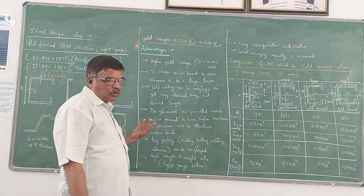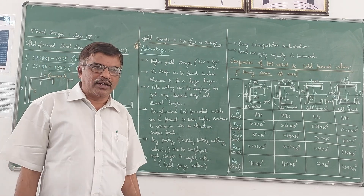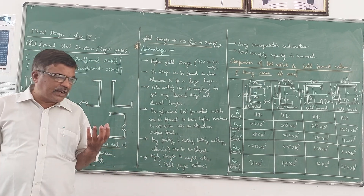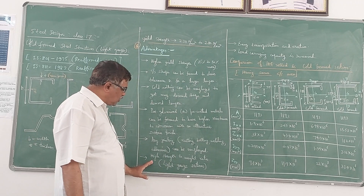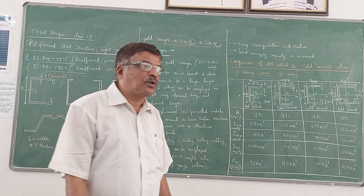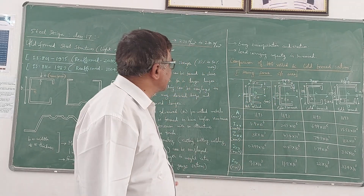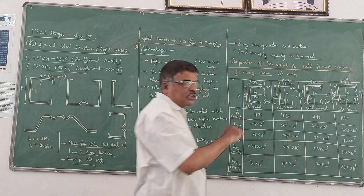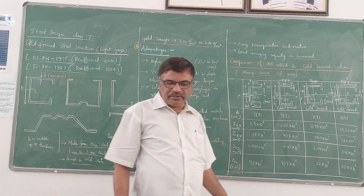Any jointing method can be adopted in cold form steel structures — riveting, bolting, welding, or even adhesives can be employed without much difficulty. Another advantage is the high strength-to-weight ratio: since these are light gauge structures with higher yield strength, the ratio of strength to weight is very high compared to hot rolled sections. Being very light in weight makes them easy to transport and erect, and load-carrying capacity can also be increased. An example comparing properties of hot rolled and cold formed sections is provided here.